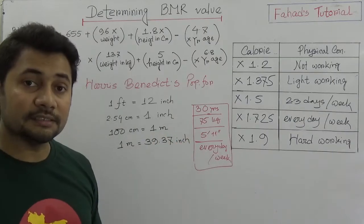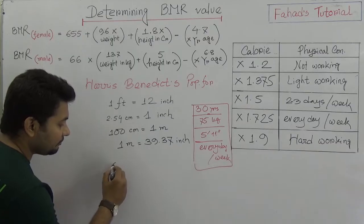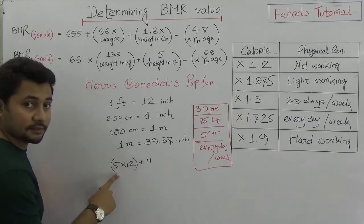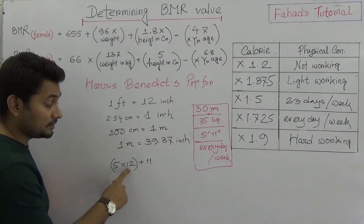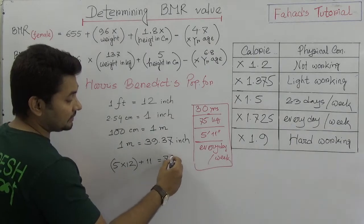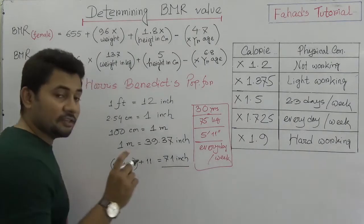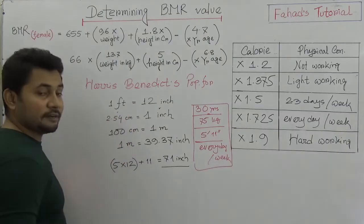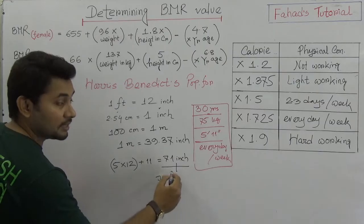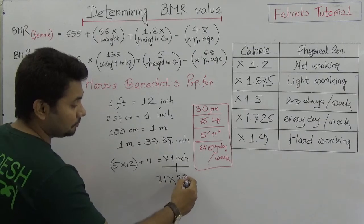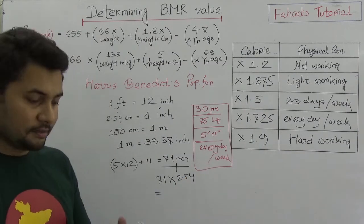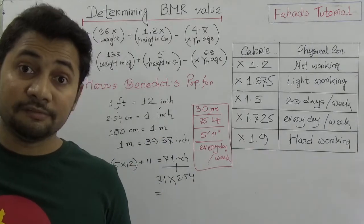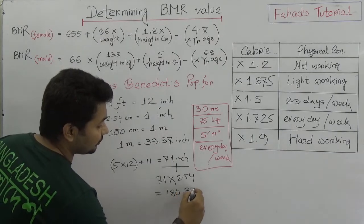If you have a scientific calculator, you can use the built-in conversion functions. For example, using Shift 8 you can access conversions from 0.1 to 4.0, such as inches to centimeters, or feet to meters and vice versa. So 1 centimeter equals 0.39 inches, and 1 foot equals 0.3 meters. These calculator functions make unit conversion easy.